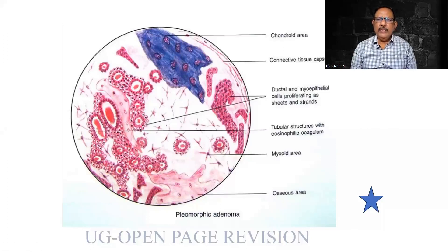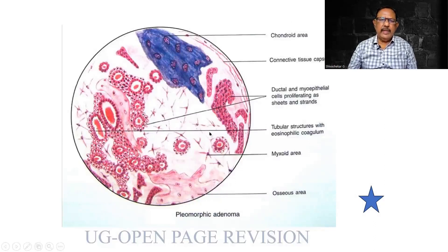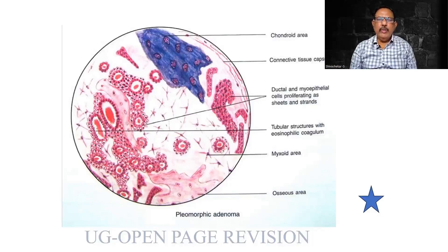It won't be kept as a specimen. You are able to find the epithelial component, then you are able to see the myxoid background, and there can be a pseudocartilaginous area that you are seeing. That is why it is called pleomorphic adenoma. You will have to explain that it is more common in the parotid region, whereas Warthin's tumor will be more common in the submandibular region.